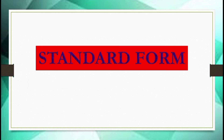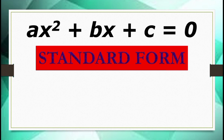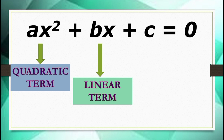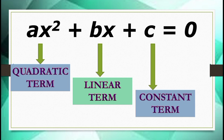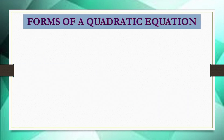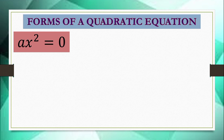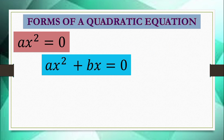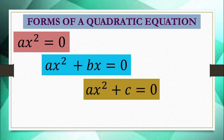The standard form is presented as ax² plus bx plus c equals 0, where ax² is our quadratic term, bx is our linear term, and c is our constant term. There are different forms of a quadratic equation: ax² equals 0 (the quadratic term alone); ax² plus bx equals 0 (quadratic and linear terms); and ax² plus c equals 0 (quadratic and constant terms).